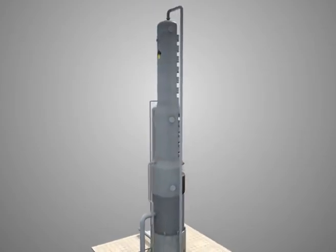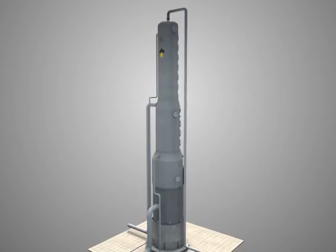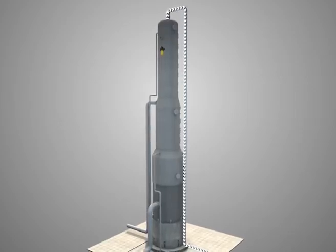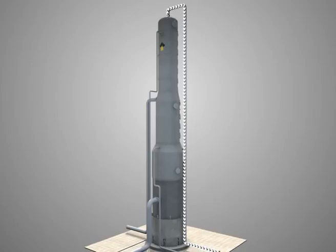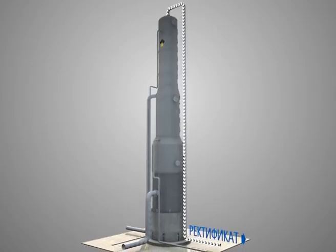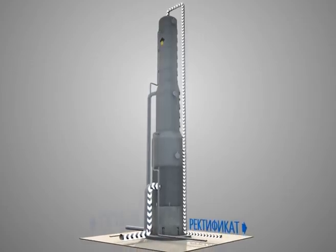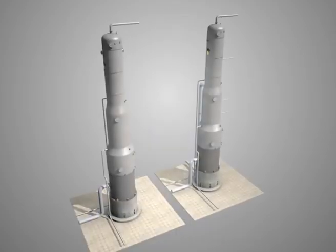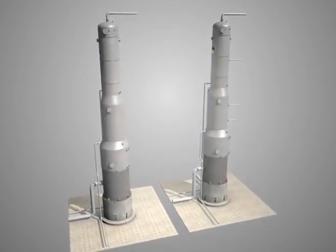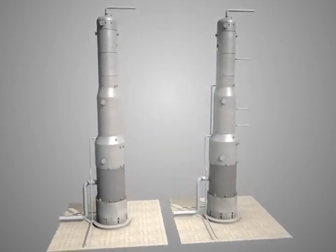Packing with a pressure drop that is about one-fifth that of the trays is often the preferred choice in cases where pressure drop is the overriding consideration, such as vacuum distillation or where vapor recompression heat pumping is used.